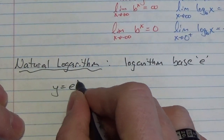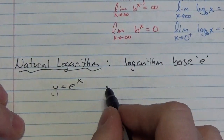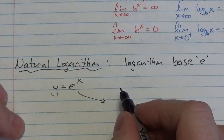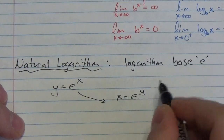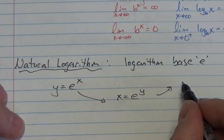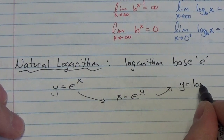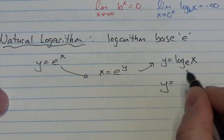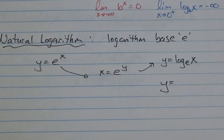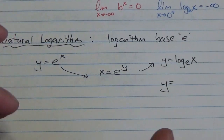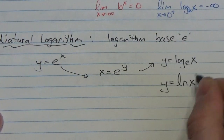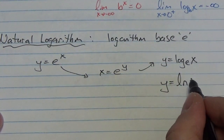So here's our exponential: y is equal to e to the x. When we find the inverse, we get x is equal to e to the y, and it turns out this is equivalent to y is equal to the log base e of x. But you're not going to write it like that. We're going to use ln of x.